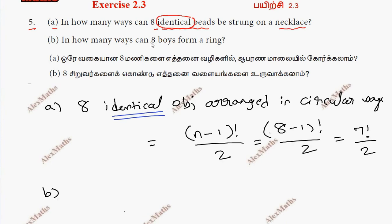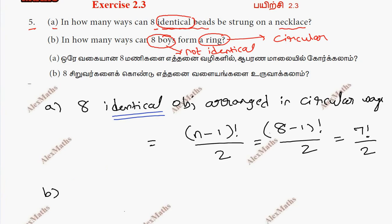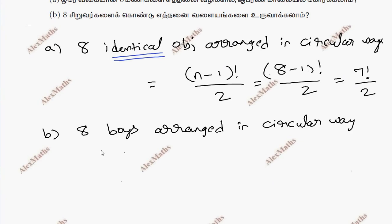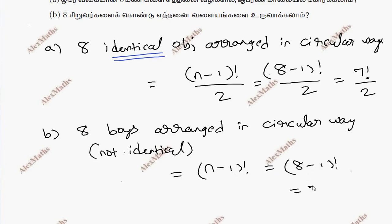Sub-part B: In how many ways can 8 boys be arranged in a circular way? The boys are different — not identical. So the formula is (n-1)!. Therefore the answer is (8-1)! = 7 factorial.